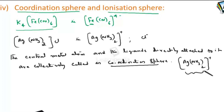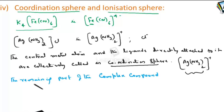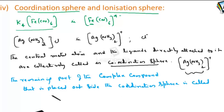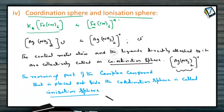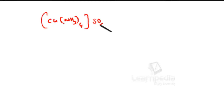The central metal atom and the ligands inside the square bracket behave as a single entity, and the part outside the bracket is called the ionization sphere. The remaining part of the complex compound other than the coordination sphere, placed outside it, is called the ionization sphere. Got the difference between the two? So in the example [Cu(NH₃)₄]SO₄, the sulphate outside the coordination sphere is the ionization sphere.